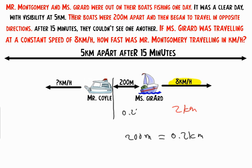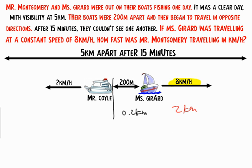So initially they were 0.2 kilometers apart. If Mr. Coyle didn't go anywhere, then they would now be 2.2 kilometers apart — adding the 2 kilometers Ms. Girard traveled to the initial 0.2 kilometers.